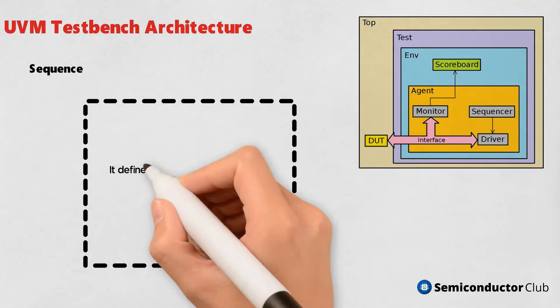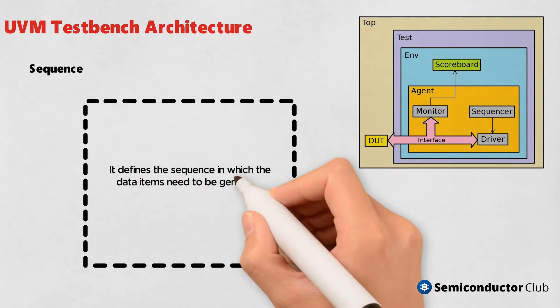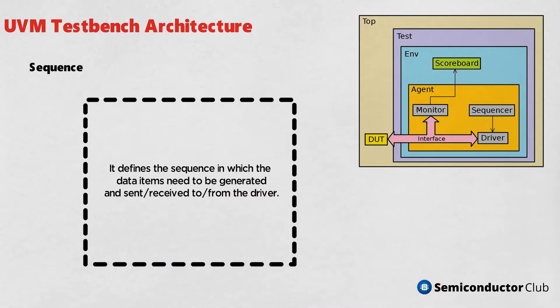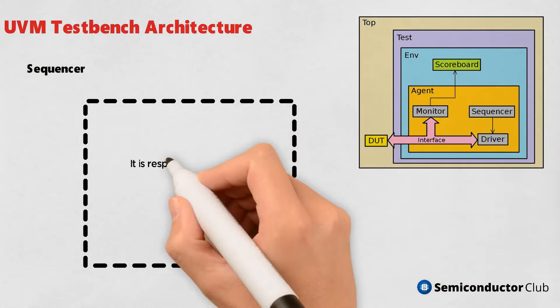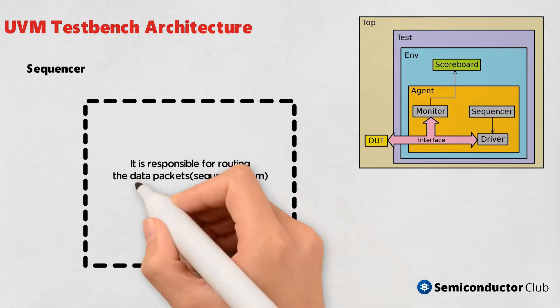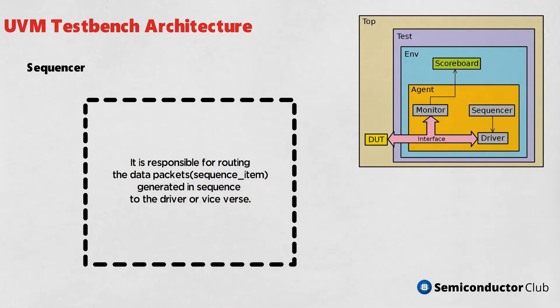Sequence: it defines the sequence in which the data items need to be generated and sent, received to/from the driver. Sequencer: it is responsible for routing the data packets, sequence_item generated in sequence to the driver or vice versa.